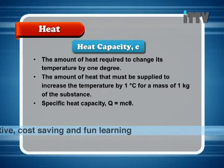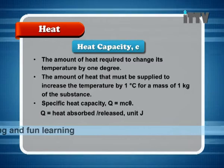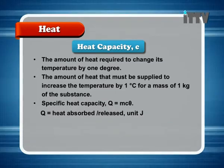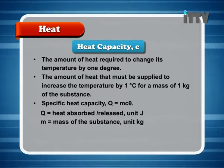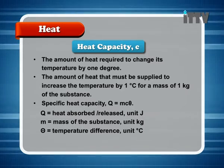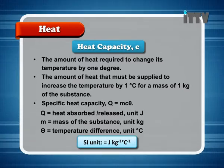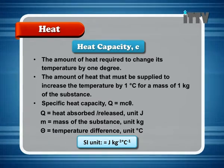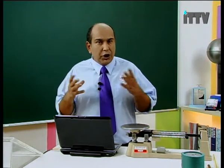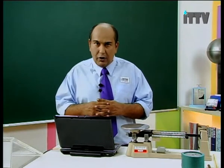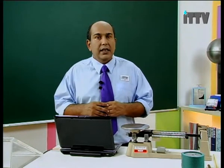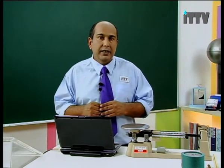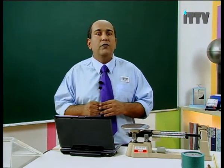Specific Heat Capacity formula: Q equals MC Theta. Where Q is the heat absorbed or released, unit Joules. M is the mass of the substance, unit kilograms. Theta is the temperature difference, unit degrees Celsius. We get the formula C equals Q over M Theta.